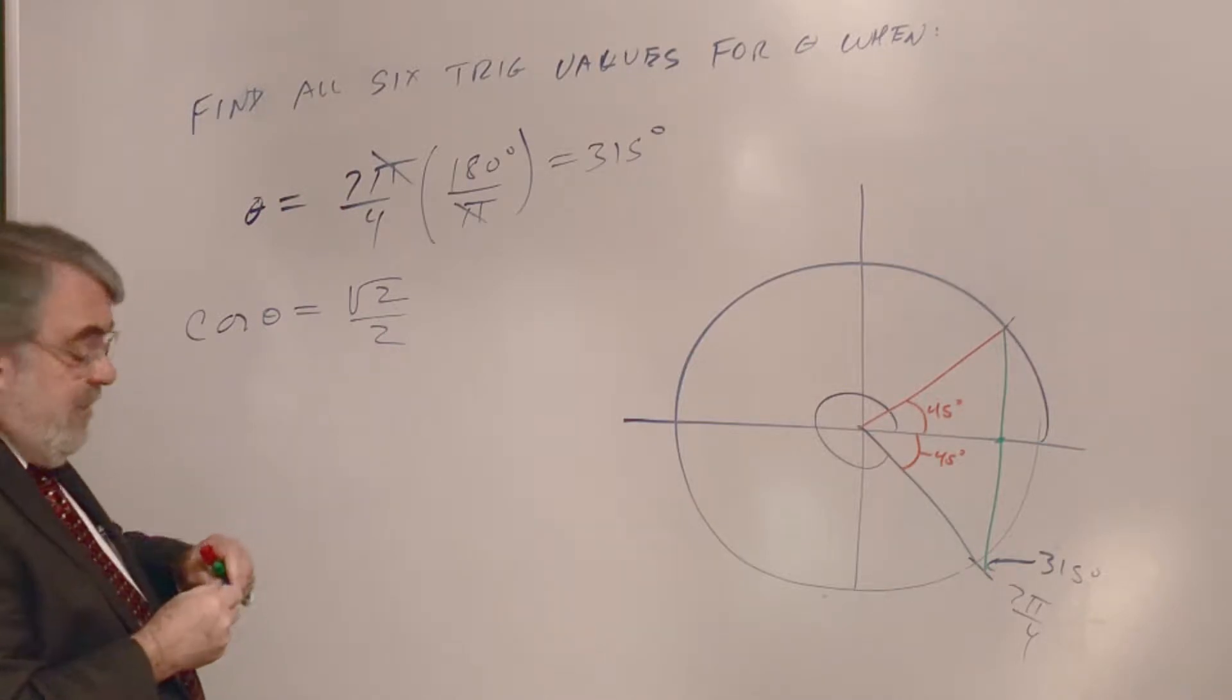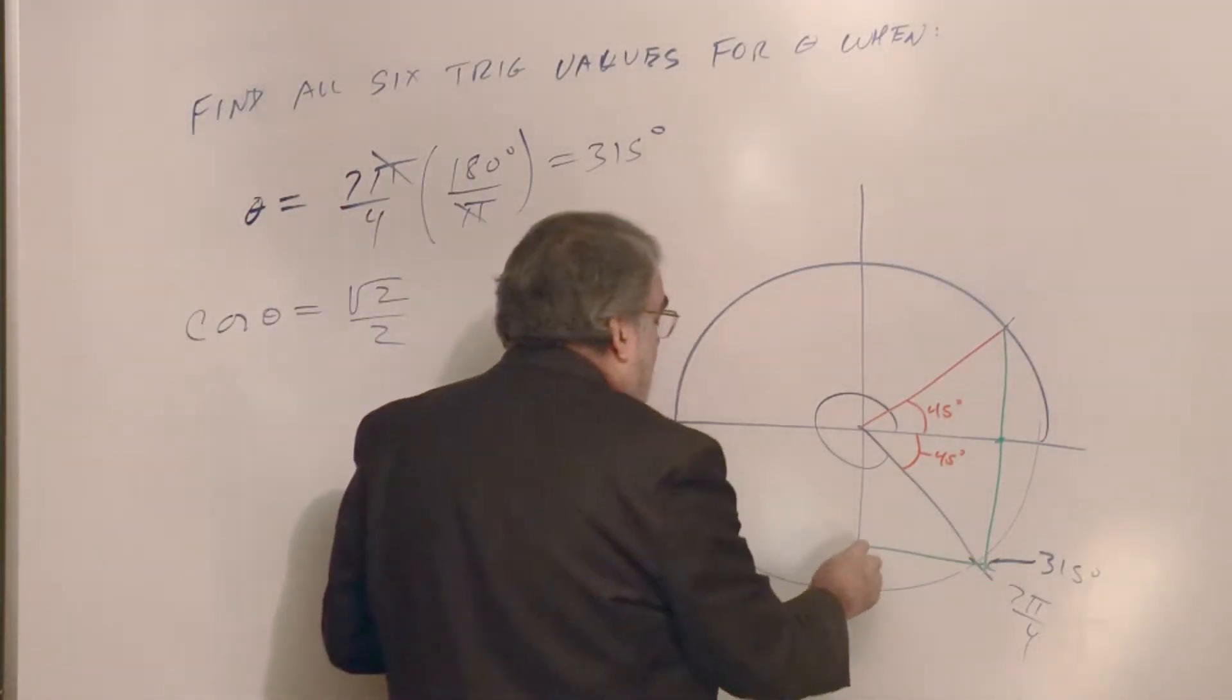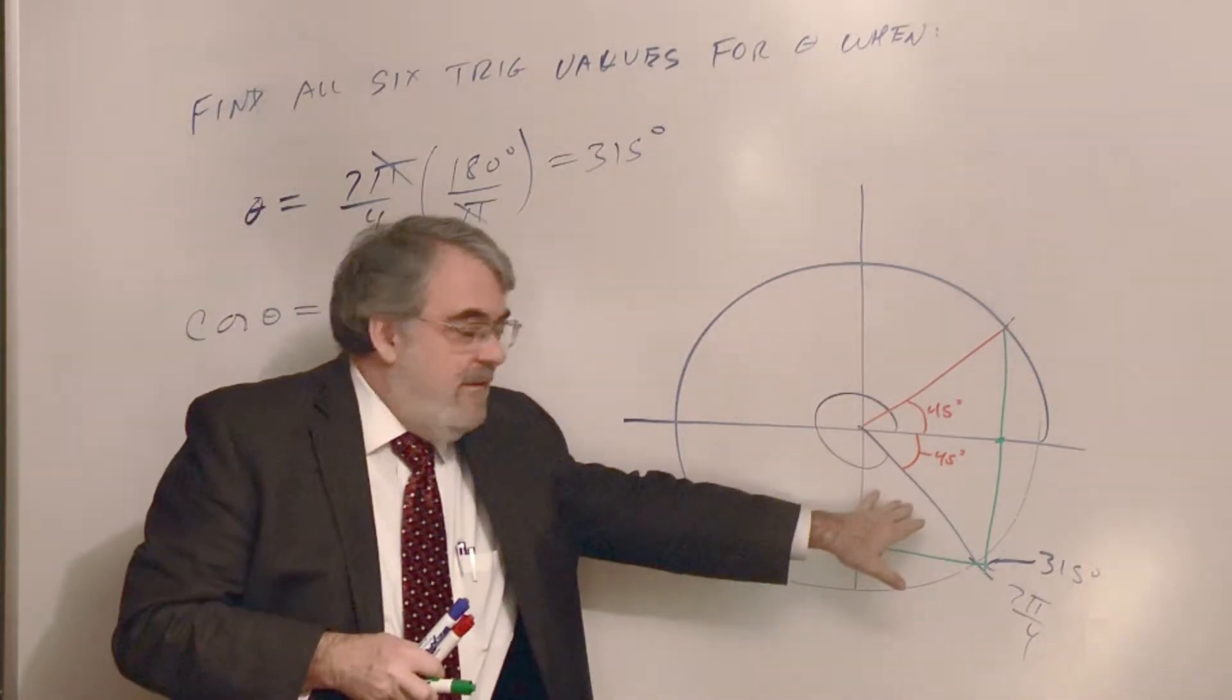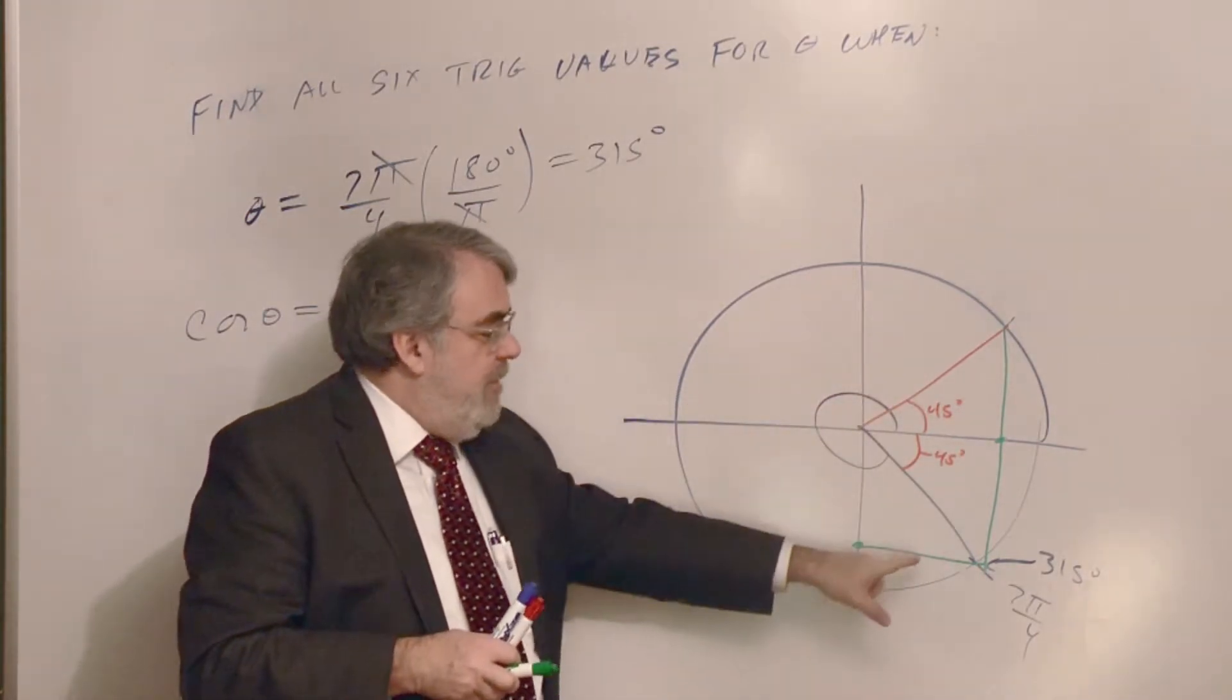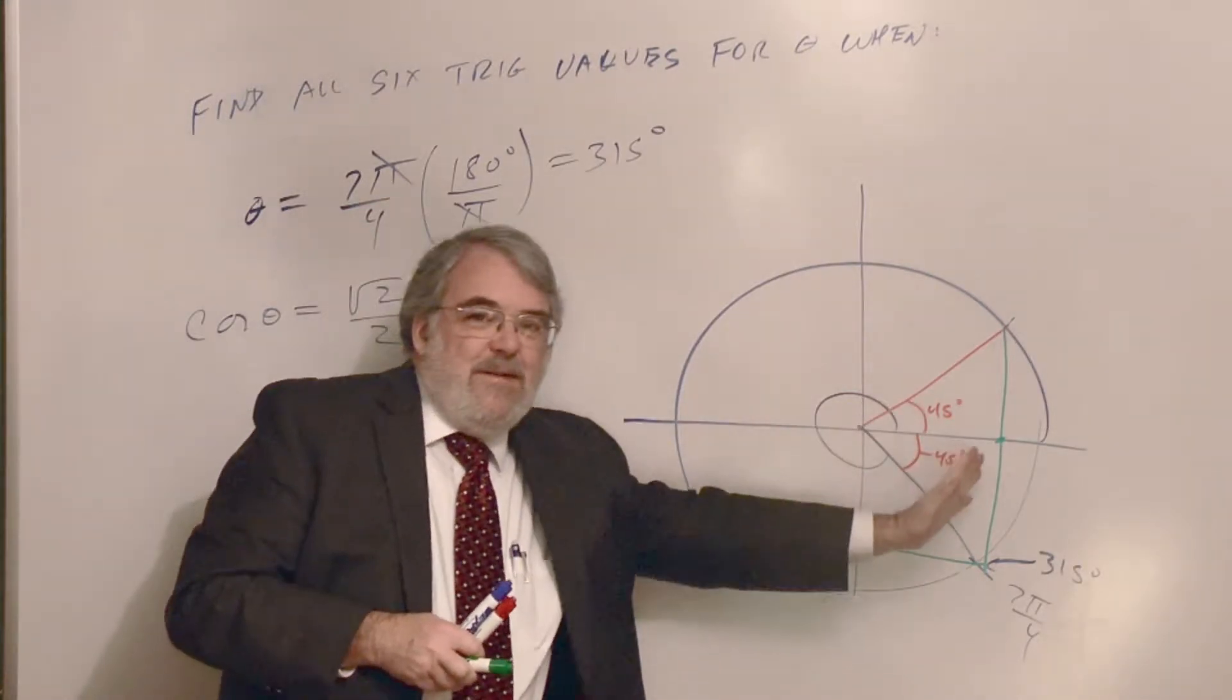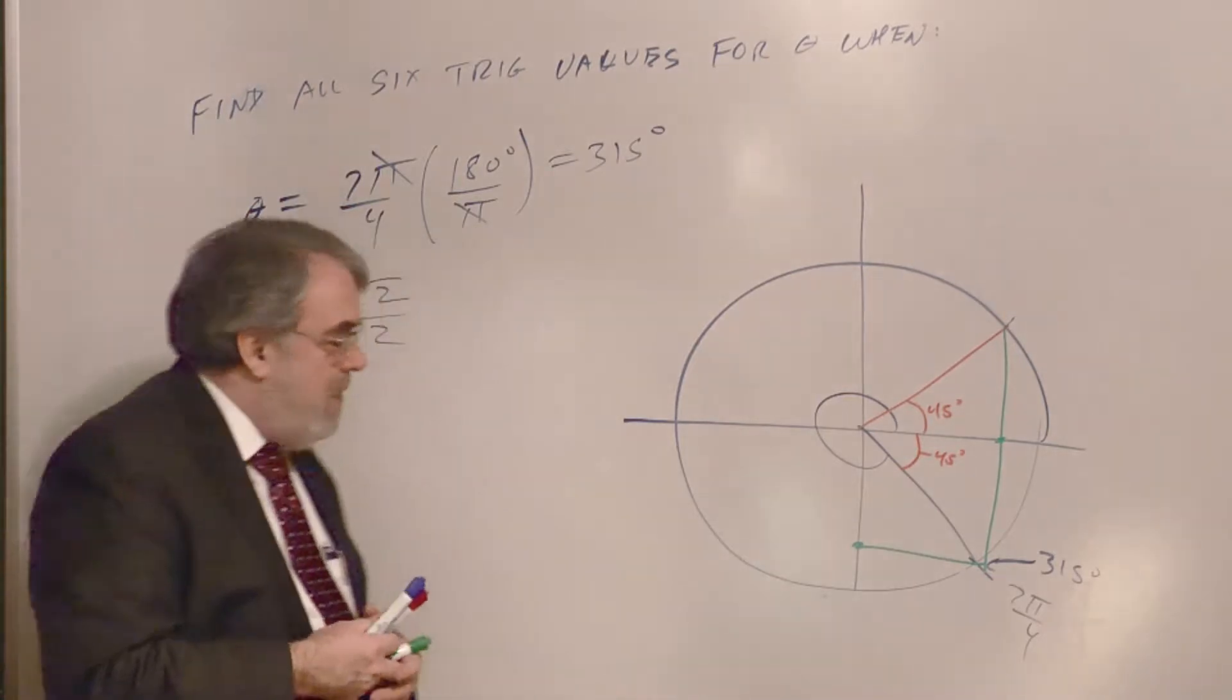And the sine, however, down here, it's going to be negative, isn't it? So sine in the fourth quadrant, remember the quadrants go 1, 2, 3, 4. Sine in the fourth quadrant is negative. Cosine is positive because y's are negative here, x's are positive.